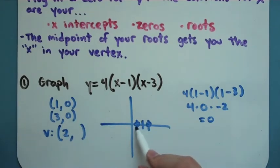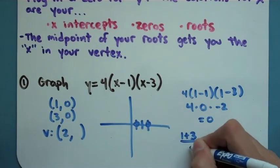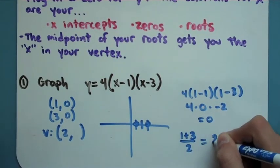My vertex is going to be at 2 comma something. You find the halfway point in between your two roots here. Another way of doing that, if you remember back from geometry, you add up the numbers and you divide by 2, and that will get you the 2 for the midpoint.